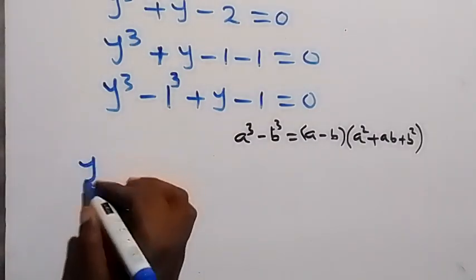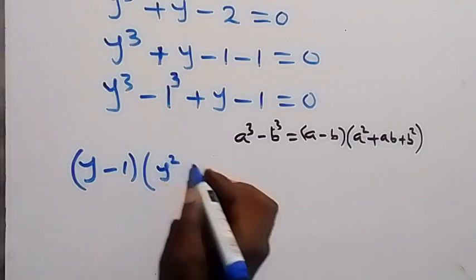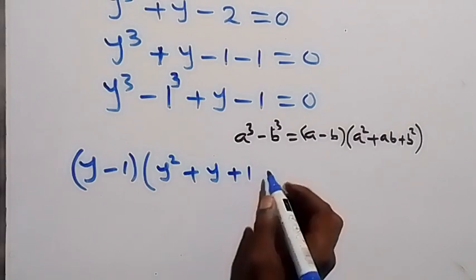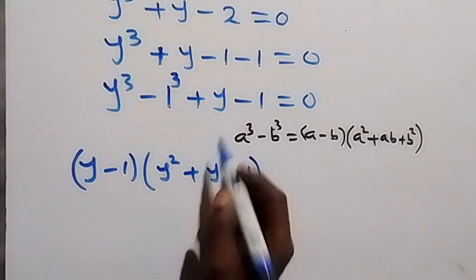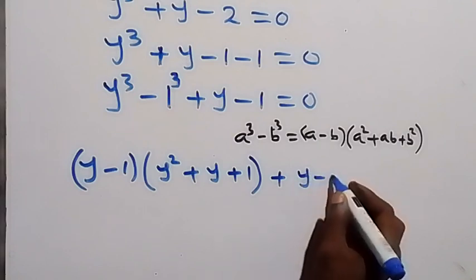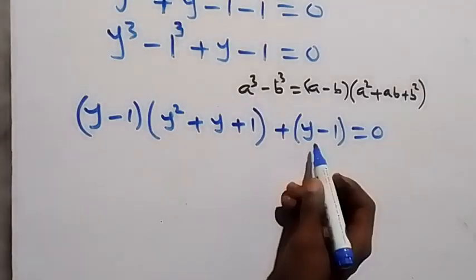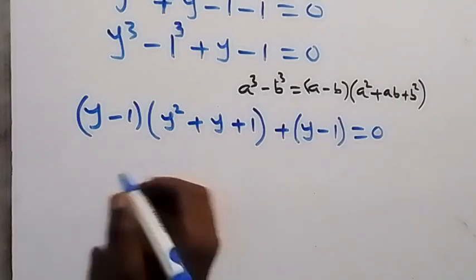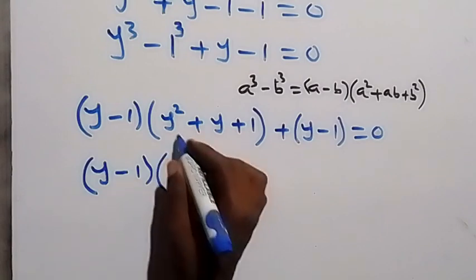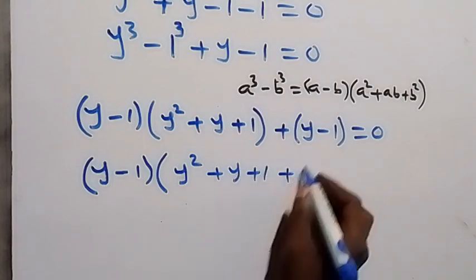Applying the identity, y cubed minus 1 can be written as y minus 1, times the bracket y squared plus y times 1, which is y, plus 1 squared, which is 1. So we have y minus 1 times the quantity y squared plus y plus 1, and then plus the term y minus 1, all equal to 0. We factor out the common y minus 1.